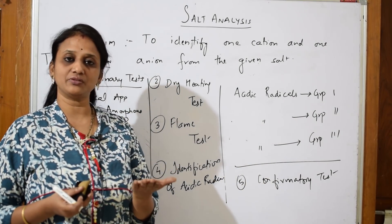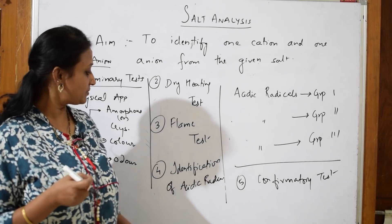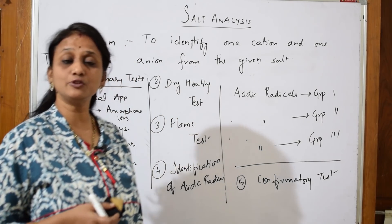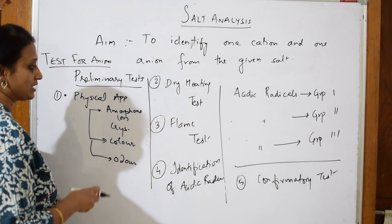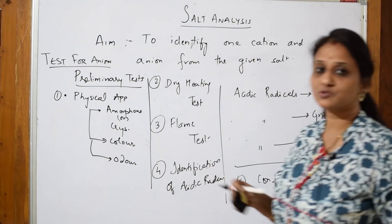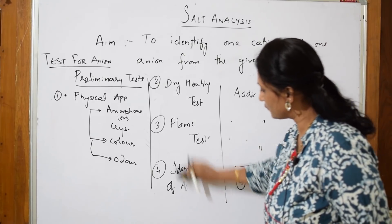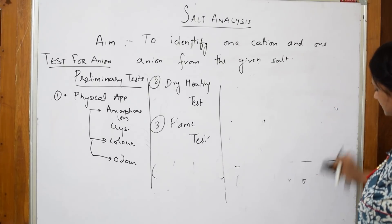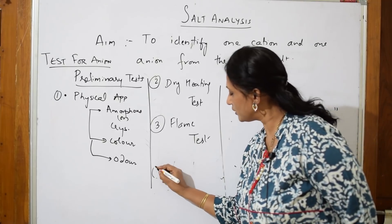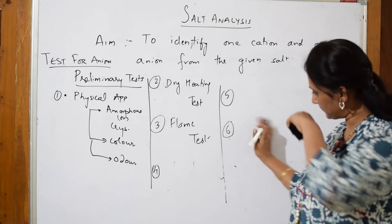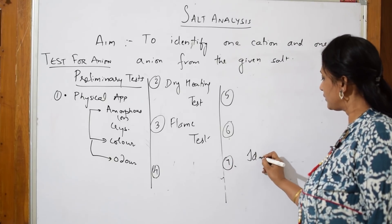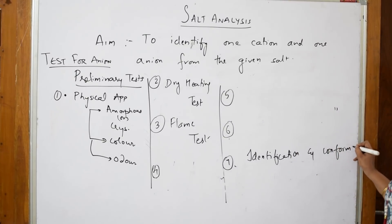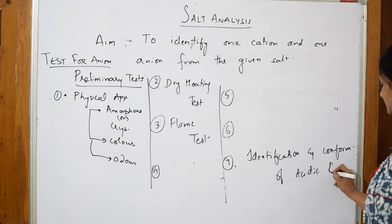So to summarize the steps: first is physical appearance, then dry heating test, then flame test, and then identification of acidic radicals. In between, there are certain additional tests performed for different types of anions. The sequence is: physical appearance (step 1), dry heating test (step 2), flame test (step 3), then additional tests, and finally identification and confirmation of acidic radicals.